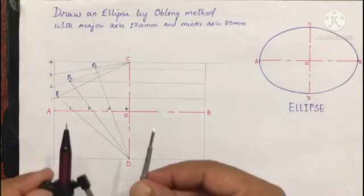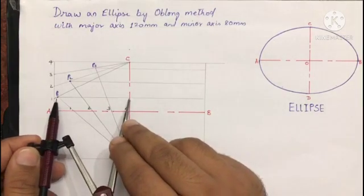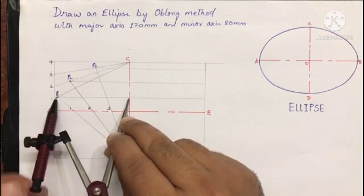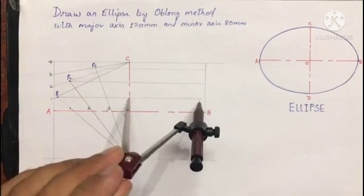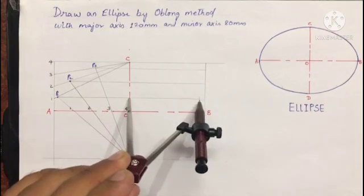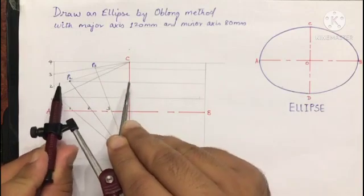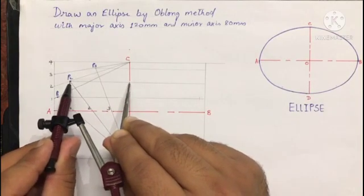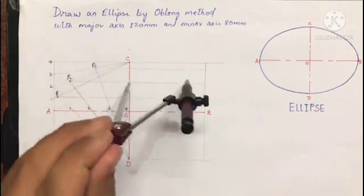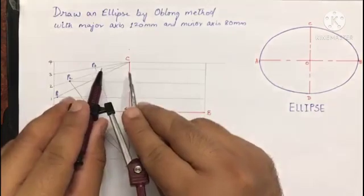To transfer these points, first we will transfer point P1. We measure from P1 to the vertical line and just transfer it in the next box. In a similar way we measure P2 from the vertical line and transfer it, then P3.